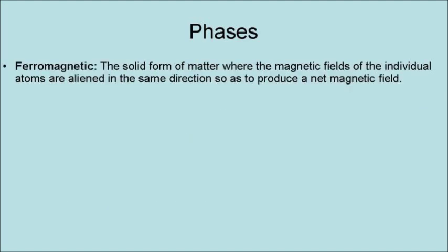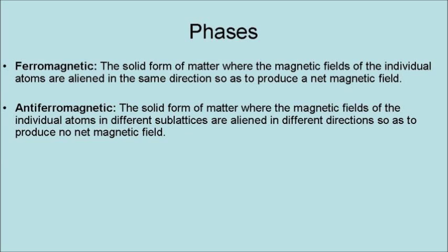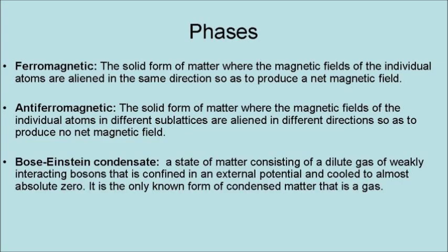Ferromagnetics is a solid form of matter where the magnetic fields of the individual atoms are aligned in the same direction so as to produce a net magnetic field. A Bose-Einstein condensate is a state of matter consisting of a dilute gas of weakly interacting bosons that is confined in an external potential and cooled to almost absolute zero. It is the only known form of condensed matter that is a gas.